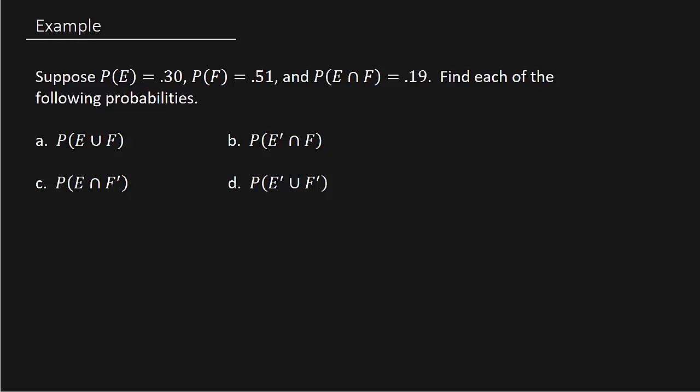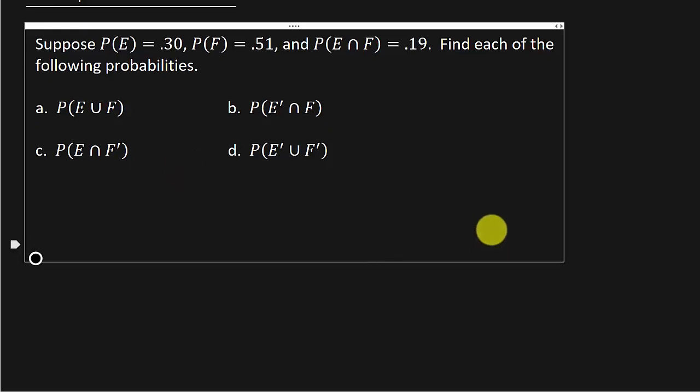So it says suppose the probability of E is equal to 0.3, the probability of F is equal to 0.51, and the probability of E intersect F is 0.19. And they want us to find each of these probabilities.